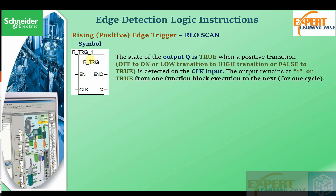Next is a rising edge trigger. R_TRIG stands for rising edge. It says that the state of the output is true when a positive transition — off to on, low to high, or false to true — is detected on the clock input.